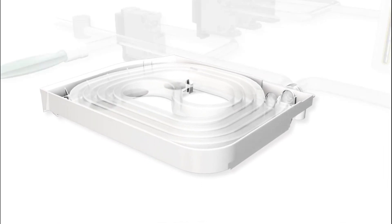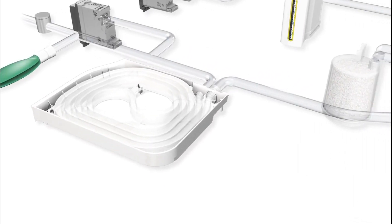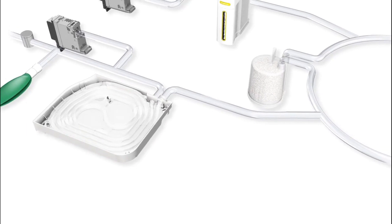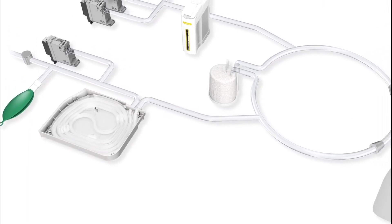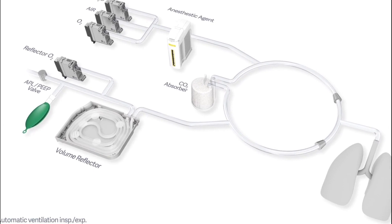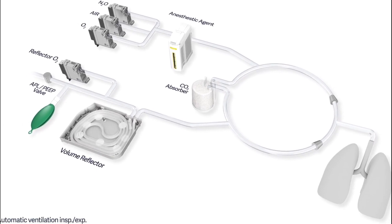Fresh gas flow leaves the anesthetic machine and passes to the patient via a one-way valve during inspiration. As expiration occurs, the exhaled gases from the patient pass via a one-way valve to the APL valve, then onto the reservoir bag or ventilator.